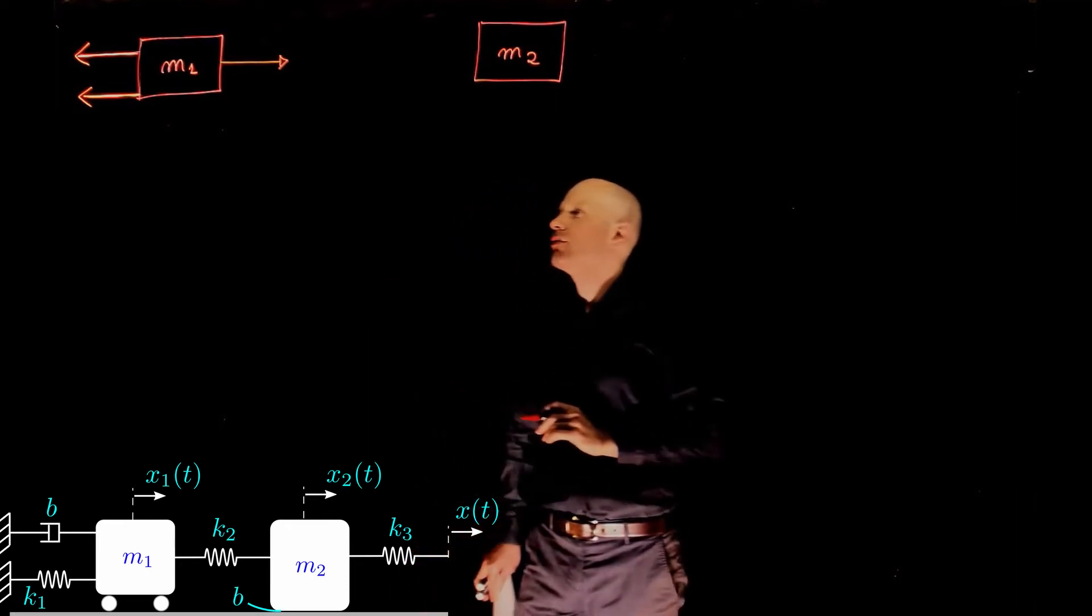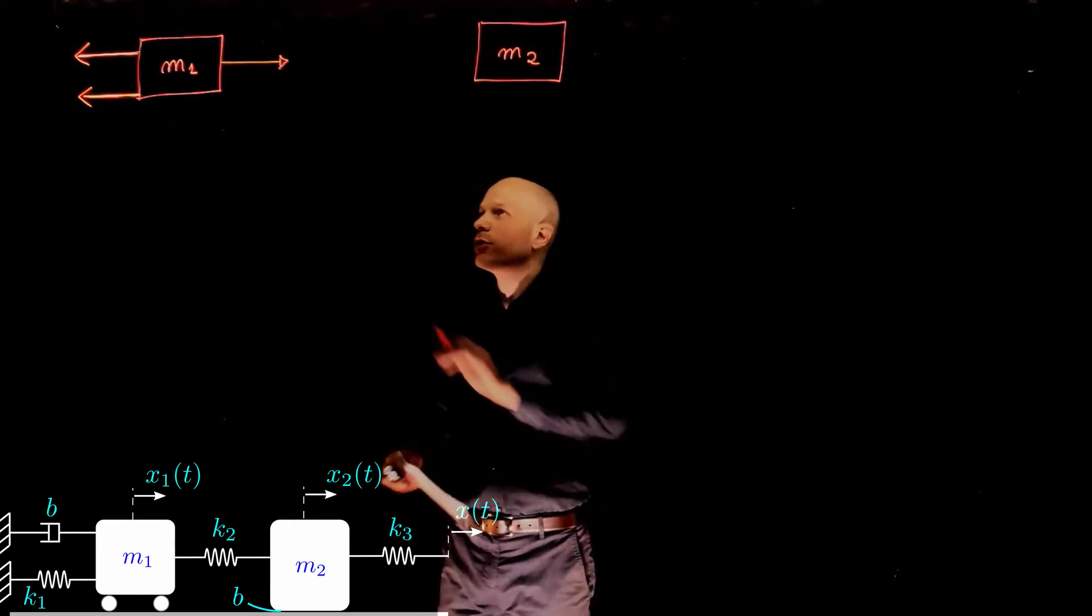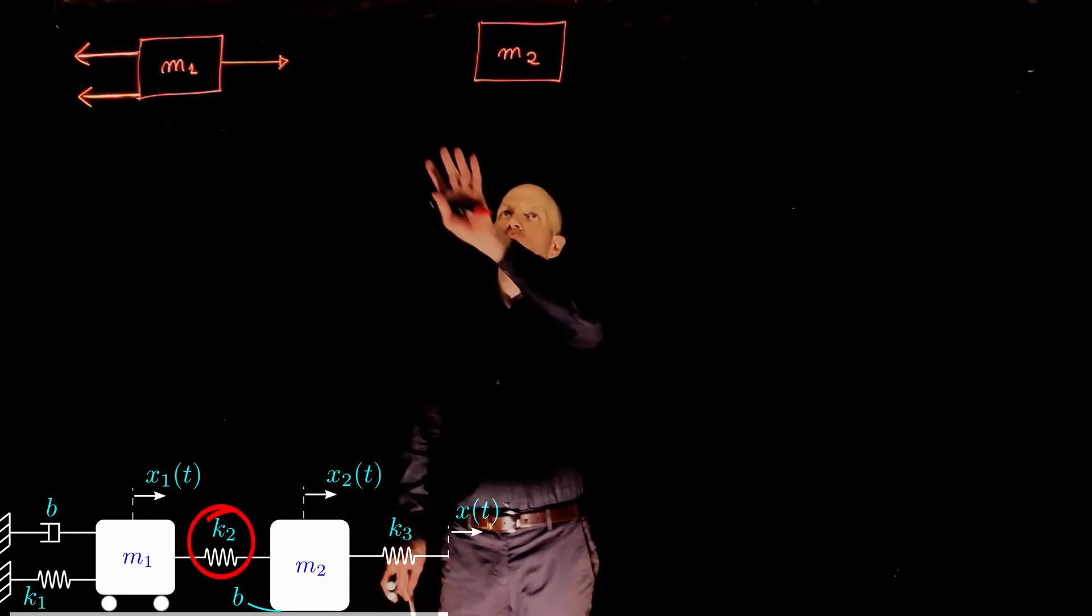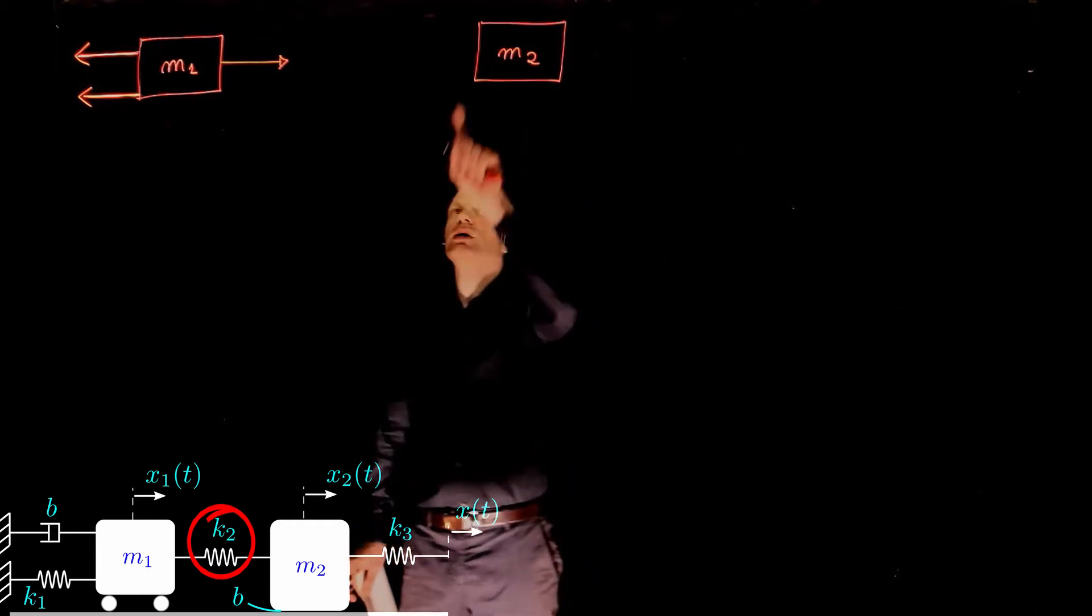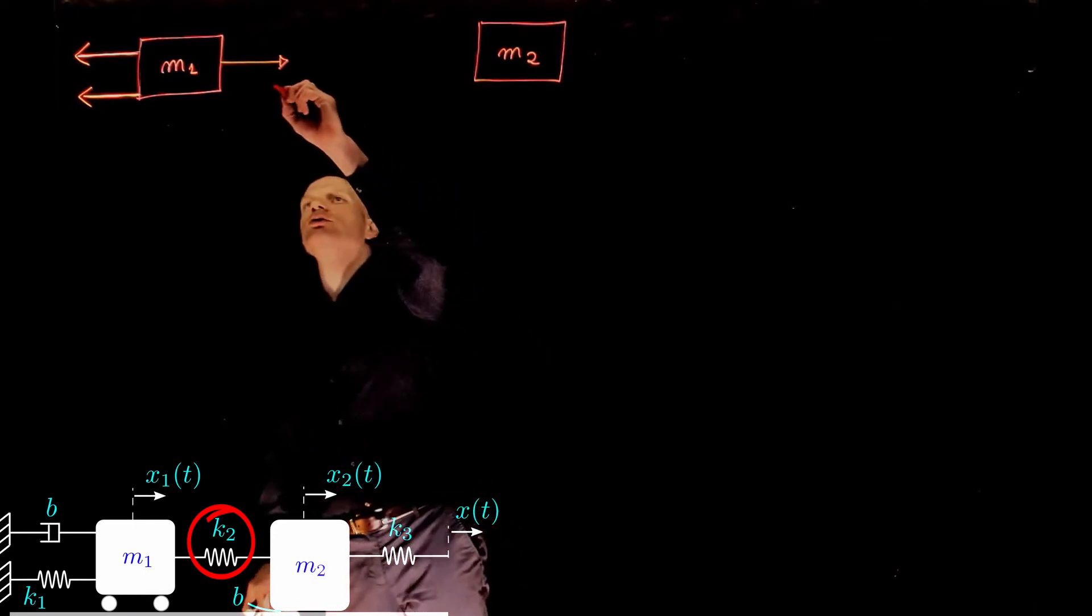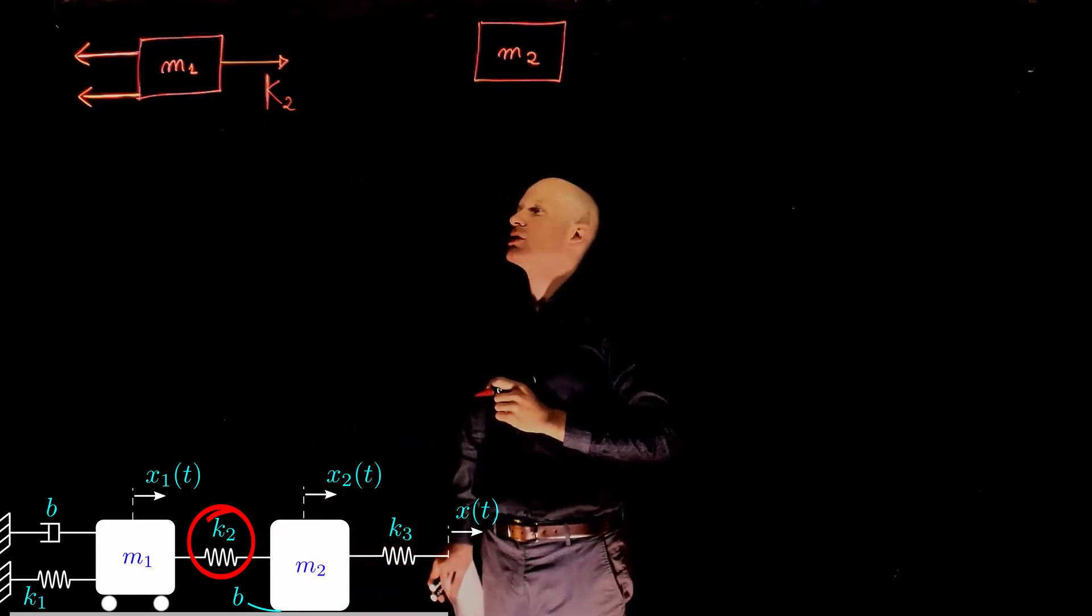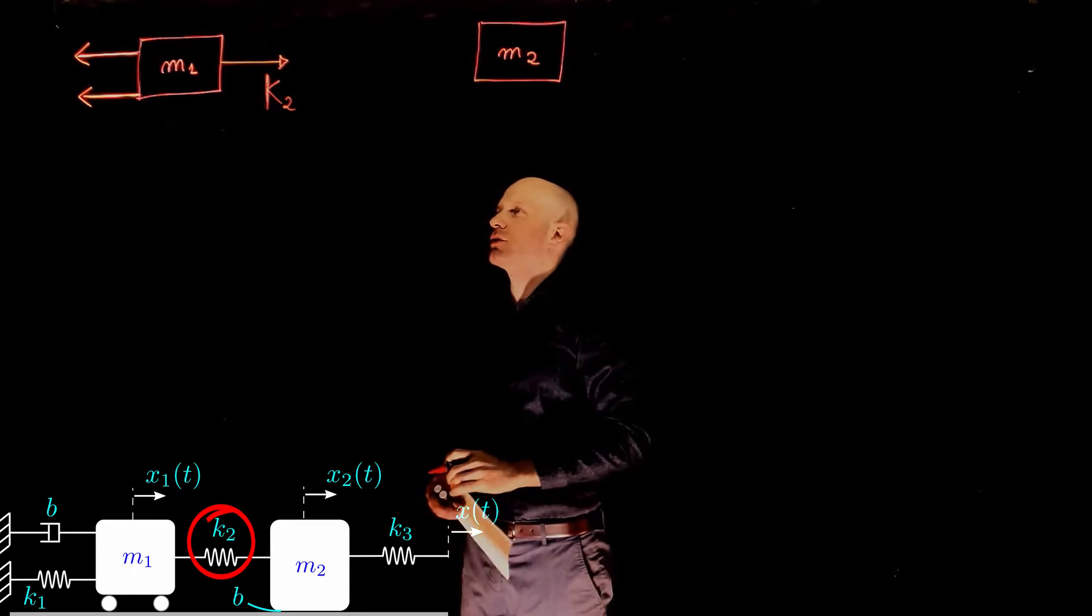For mass m1, we have three forces acting on it. The first force is the force due to the spring that connects m1 and m2. If the system moves to the right, then the spring is pulling on mass m1 and the magnitude of the force that it applies to mass m1 is proportional to the displacement of that spring. So k2, the stiffness of the spring,